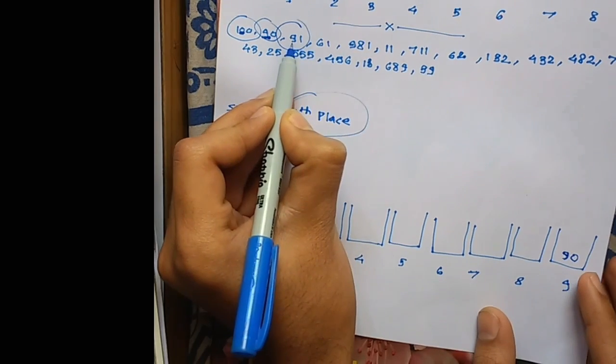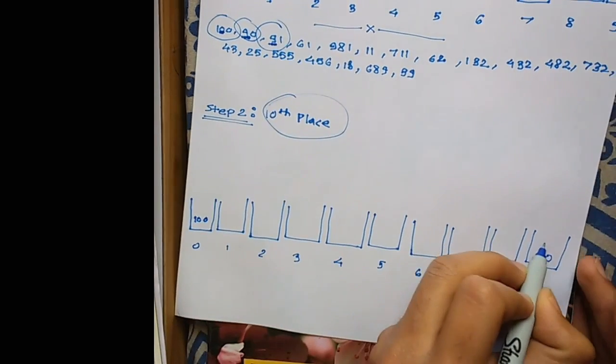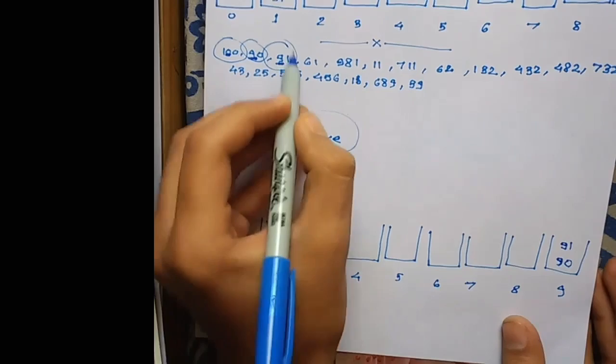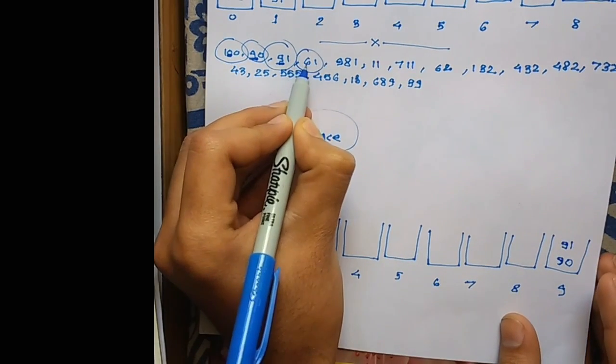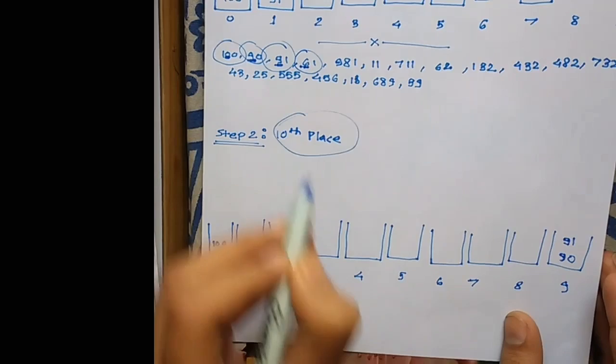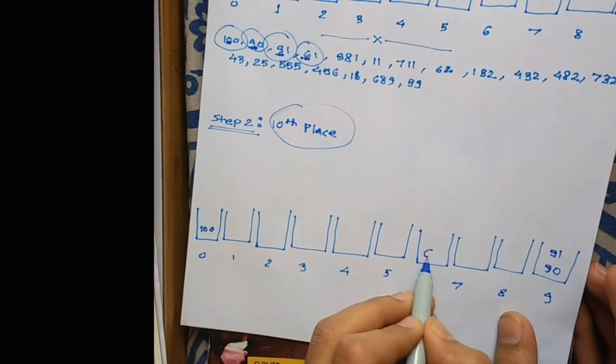In 91, the 10th place is also 9, so 91 goes in bucket 9. In 61, the 10th place is 6, so it goes in bucket 6.